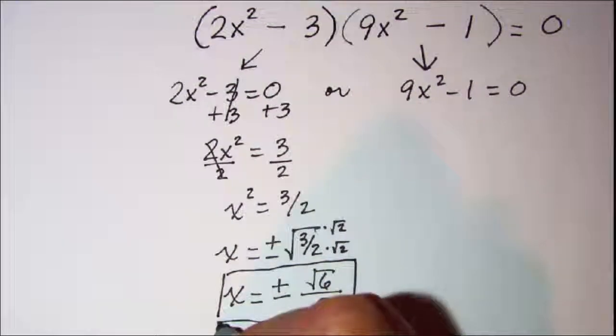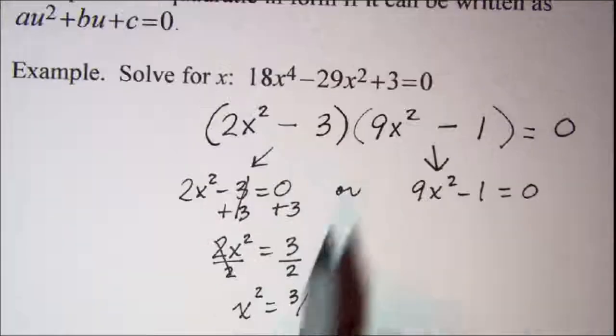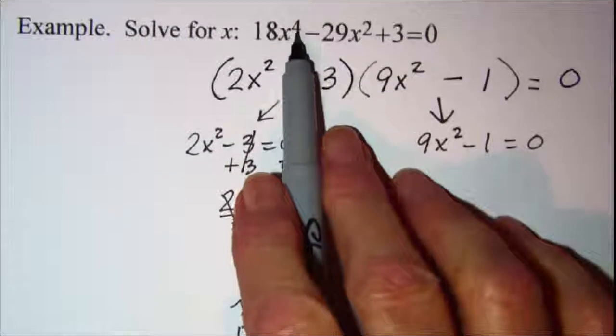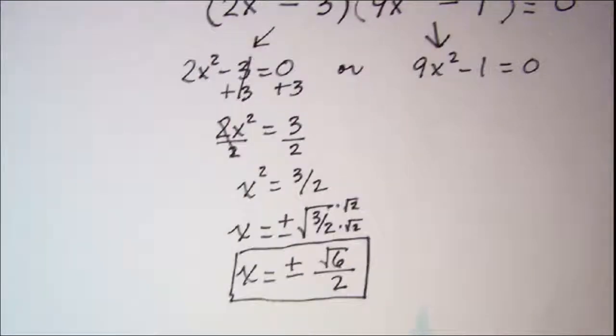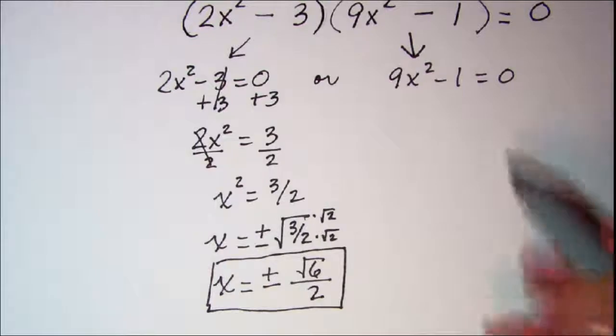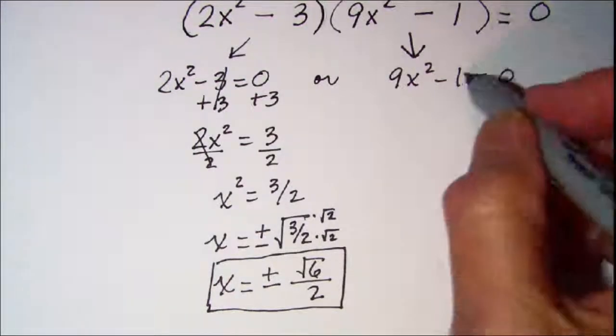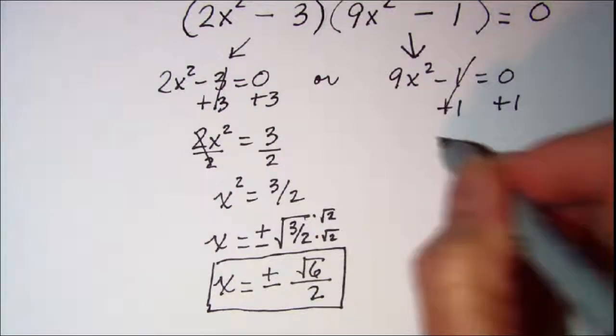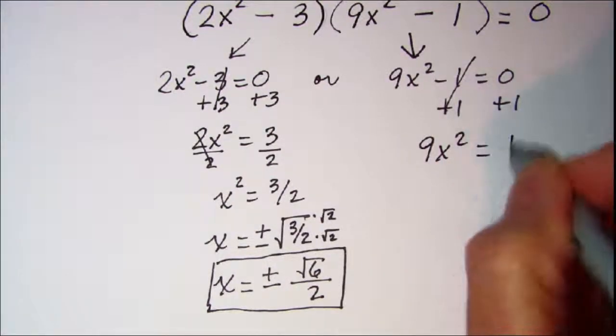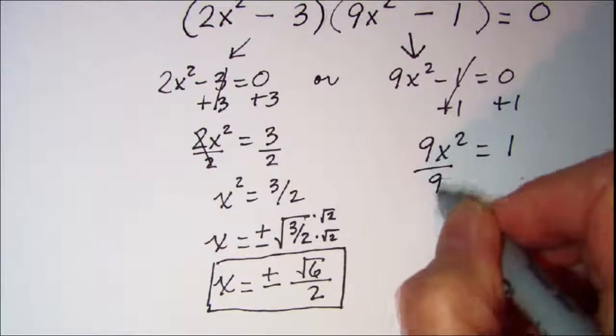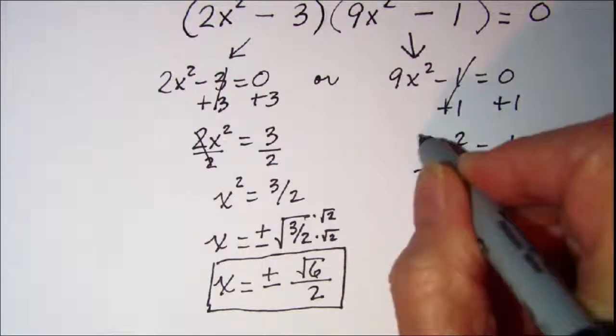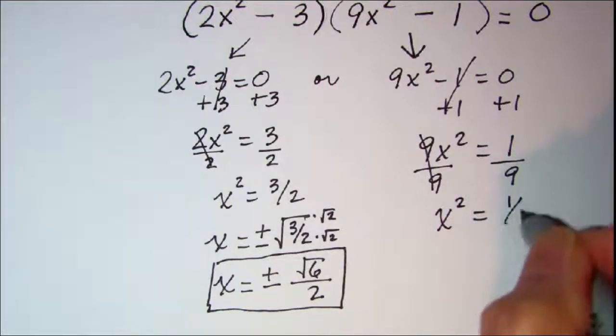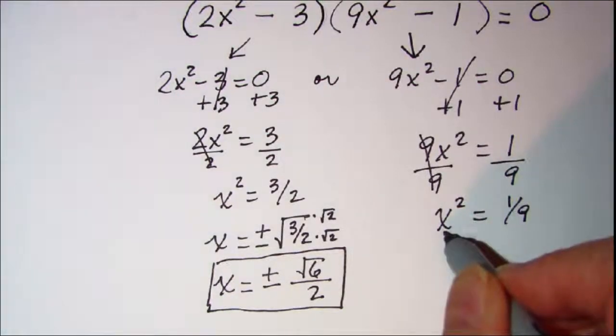I know that since this is a fourth degree equation that I'll have at most four solutions. So if I solve this quadratic, add 1 to both sides, I get 9x squared is equal to 1. Then divide both sides by 9. x squared is equal to 1 ninth and then square root both sides.